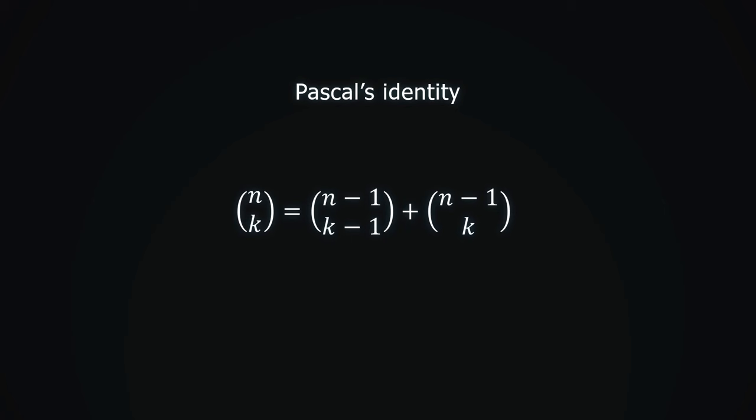This is Pascal's identity. It tells us we can either take the first element or not. First, we counted using the definition of the binomial coefficient. And then we counted by considering the first element.